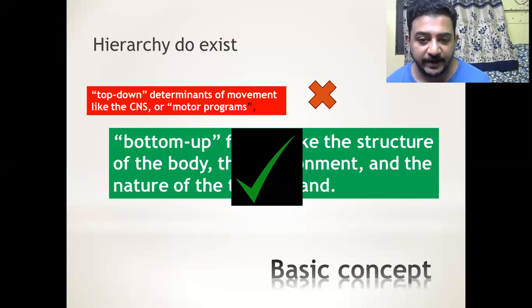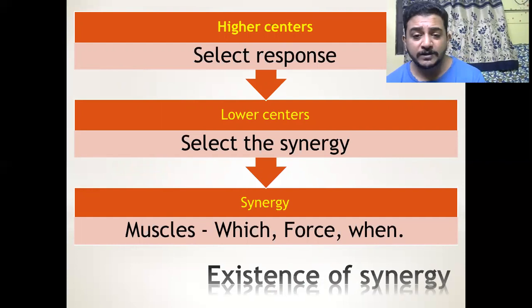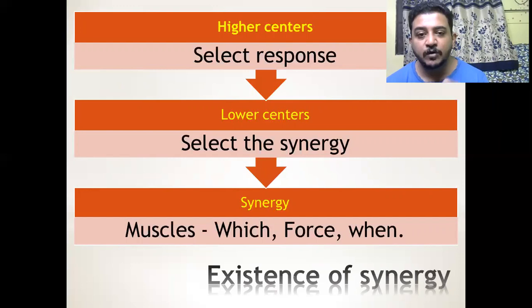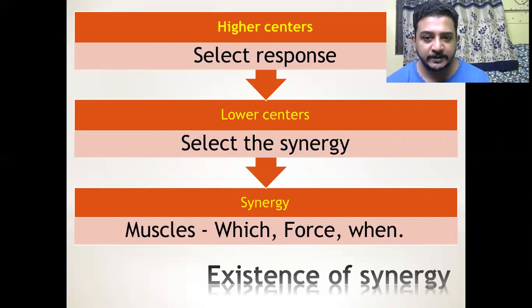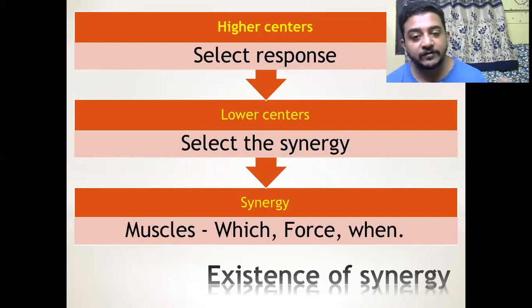This theory proved the previous view wrong. Now, how does movement take place? Yes, there is a higher center. What is the role of the higher center? It selects a response. For example, if you want to save a small kid who is in water, your higher centers will detect the situation and give a response that you have to save the child. The lower centers then send this information to the synergies.